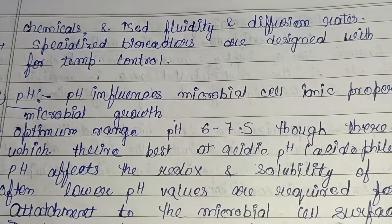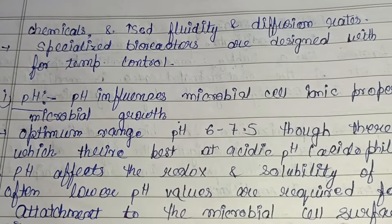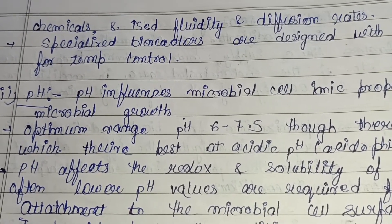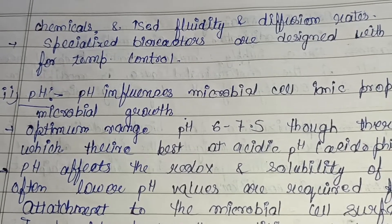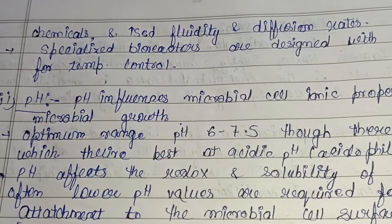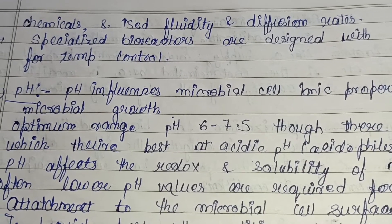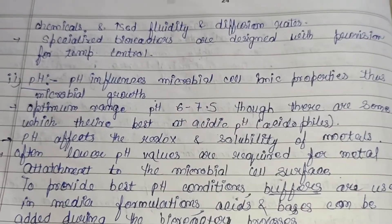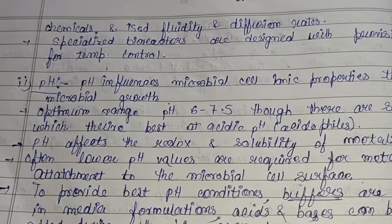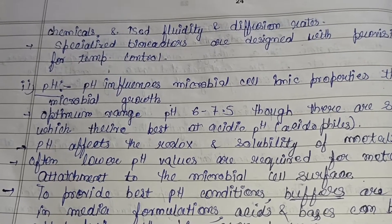When a microbe is involved in the bioremediation process — whether treatment of oil spills or heavy metals — increased temperature leads to more dissolution of chemicals, which helps increase the activity of microbes. Specialized bioreactors are designed with provision for temperature control, so that the activity at increased temperature is maintained and microbes can perform their bioremediation process more effectively.